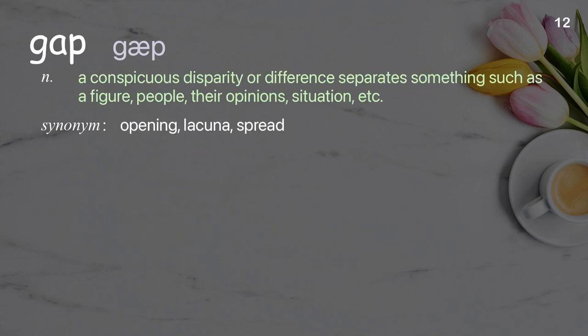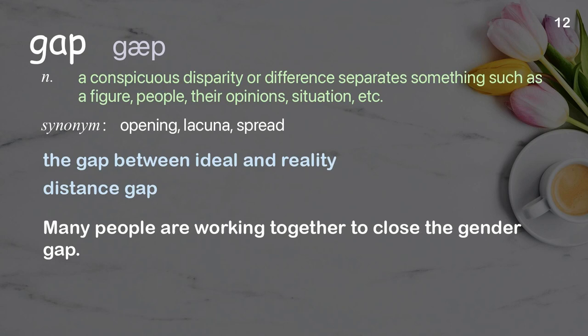Gap: a conspicuous disparity or difference; separates something such as figures, people, their opinions, or situations. Examples: the gap between ideal and reality, distance gap. Many people are working together to close the gender gap.